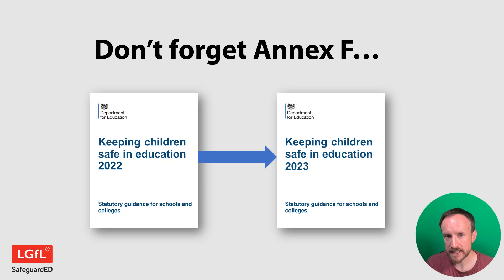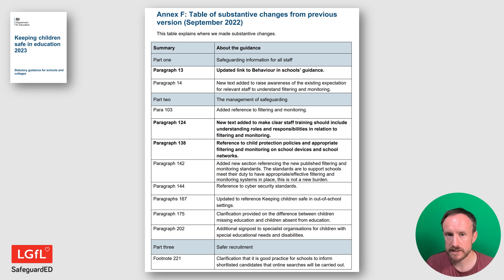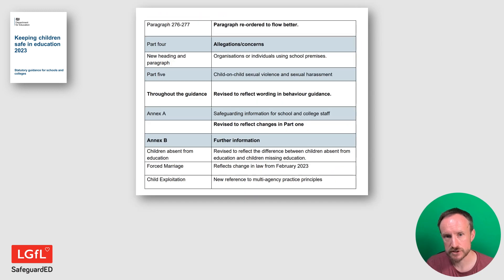And that was it, except to mention Annex F. The annex at the end of KCSIE always gives you the list of substantive changes. We've talked about some today that have been on this list and some that were not because they stuck out to us. It's really key to look there and think about what is important for the DfE and what are the key changes this year, because Ofsted too will doubtless be looking at these, and they might indicate the direction of travel and what's going to happen in future.